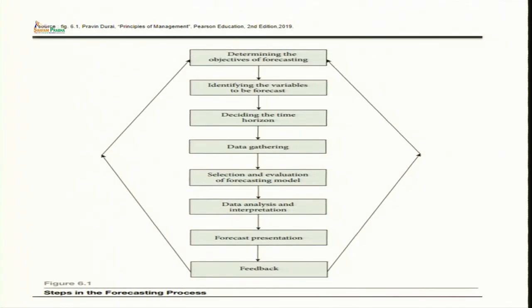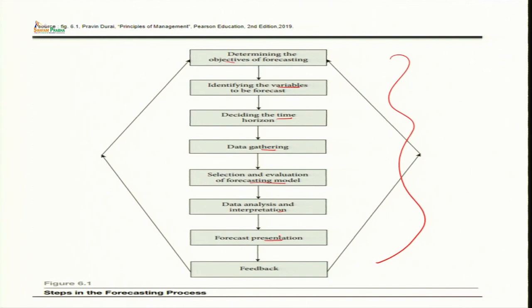Let us discuss the process of forecasting in detail. As you can see here, the process of forecasting has these formal steps: determining objectives, identifying the variables, deciding the time horizon, gathering of data, selection of forecasting model, data analysis and interpretation, and further, forecast presentations are important, and after that, feedback plays a major role.